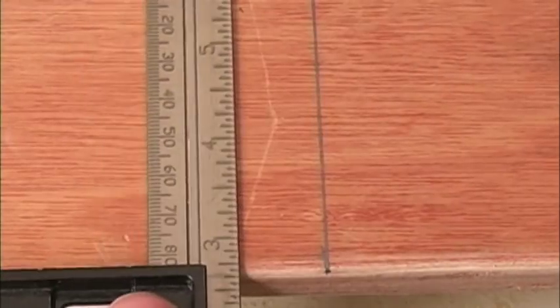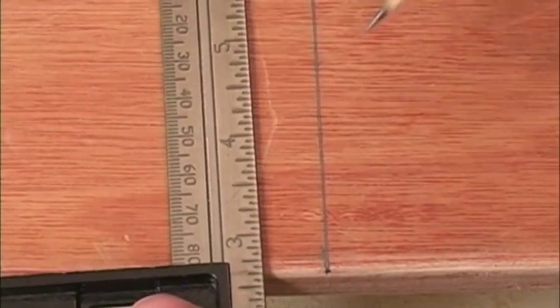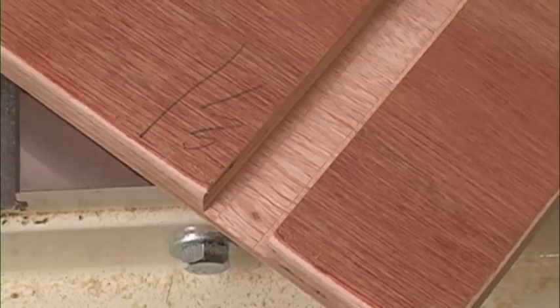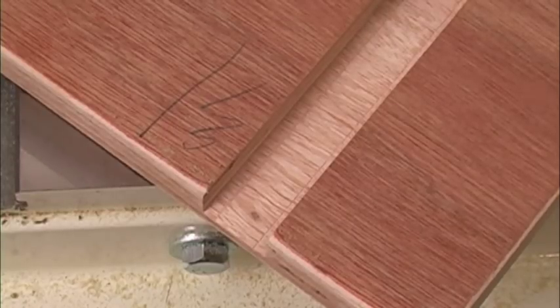When I lay out dados, I've learned to draw both sides of the dado and draw a squiggly line in the middle where the wood is to be removed. I learned this because it's very easy to cut the dado on the wrong side of a single line, like this dado was supposed to be over here.